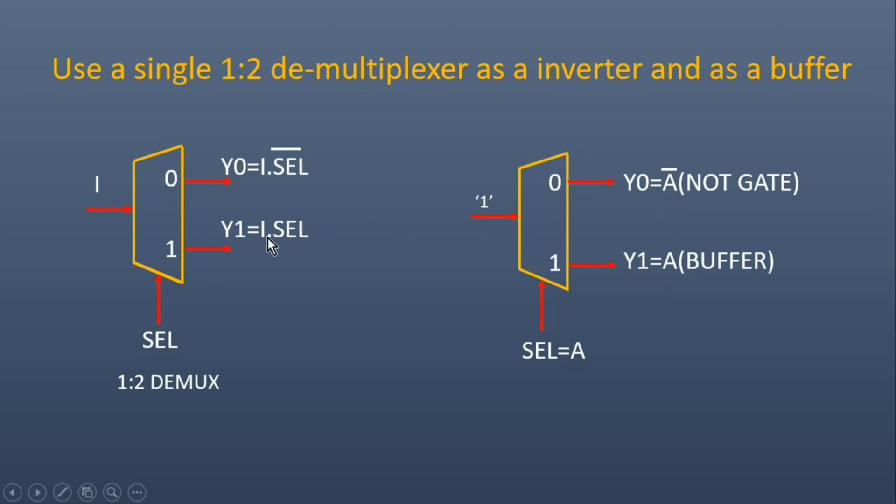So if you see very carefully, A is the input, Y0 will become the output of a NOT gate, and Y1 is the output of a buffer. This way we can convert a 1x2 demultiplexer into a NOT gate as well as a buffer.